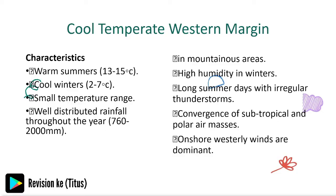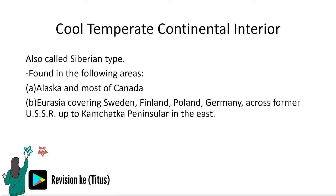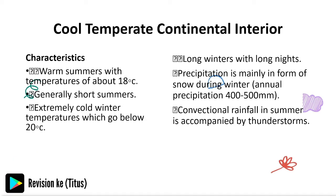The cool temperate continental interior, also called the Siberian type, is found in Alaska and most of Canada, and across Eurasia — Sweden, Finland, Poland, Germany across to the Kamchatka Peninsula in the east. Key characteristics include long winters with long nights and generally short summers.